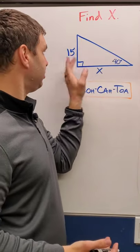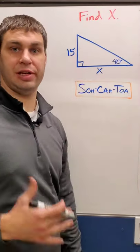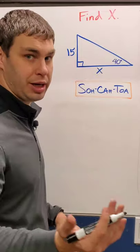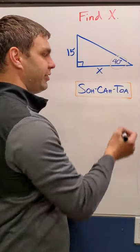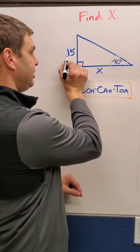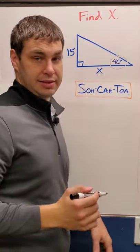In a right triangle, when you're only given an angle and another side length and you're asked to find X, you have to use the word SOH-CAH-TOA to help you out. Compared to the angle that I'm given, what I have is the opposite side, 15, and the adjacent side, X.